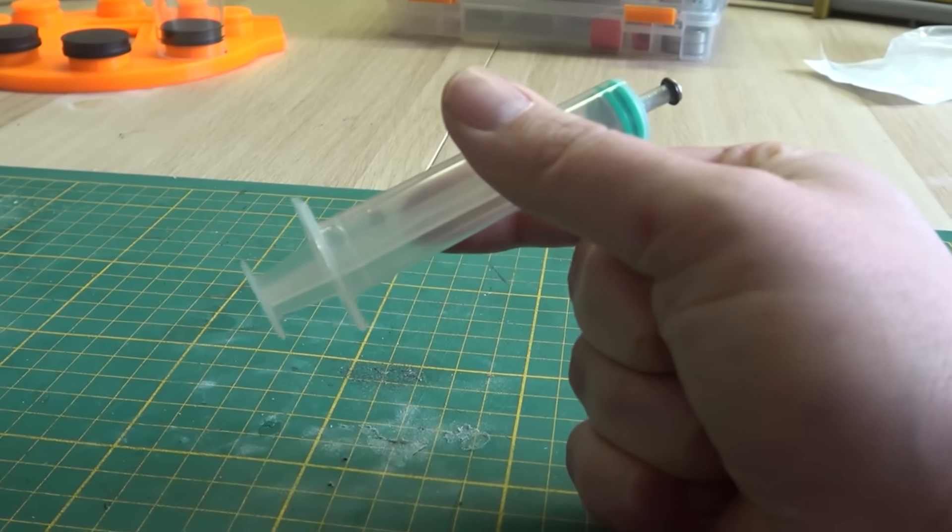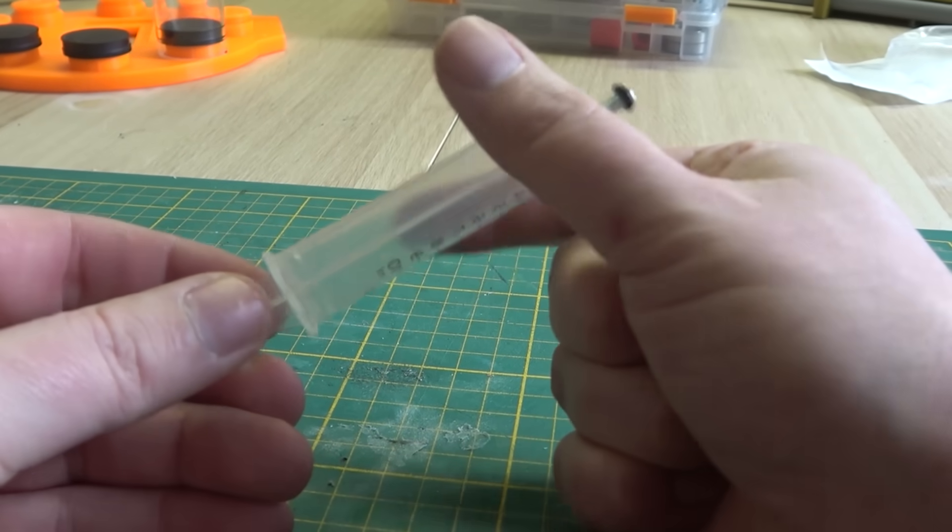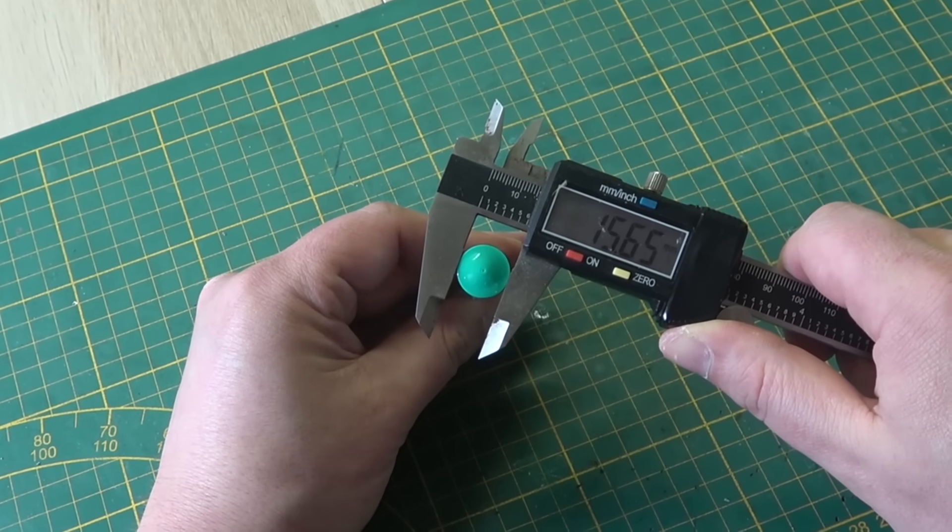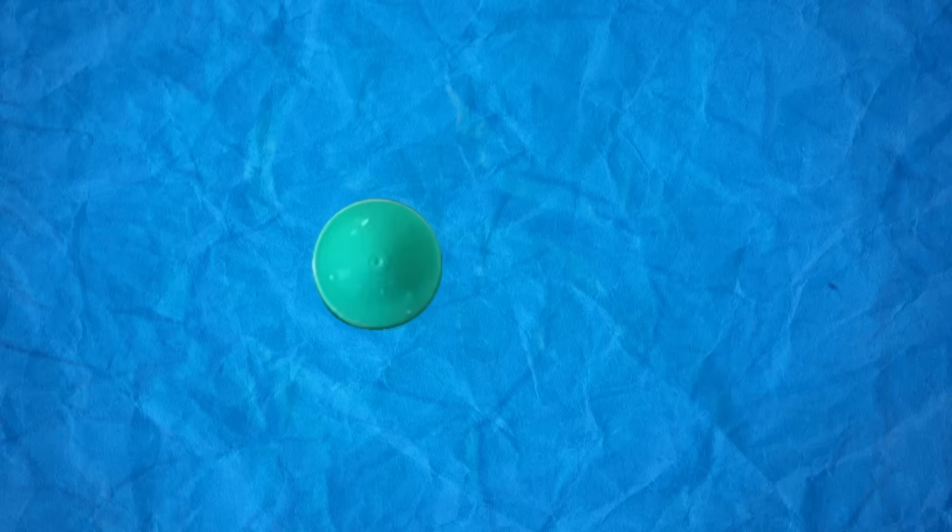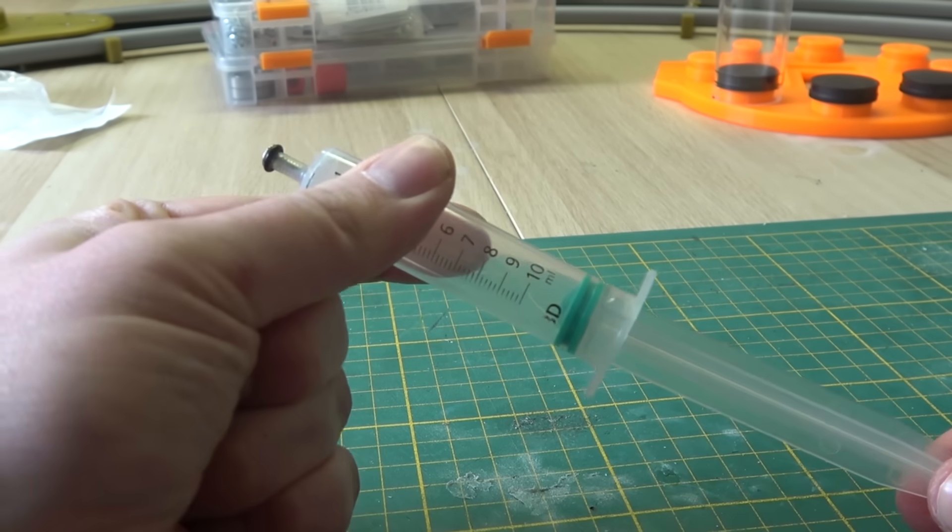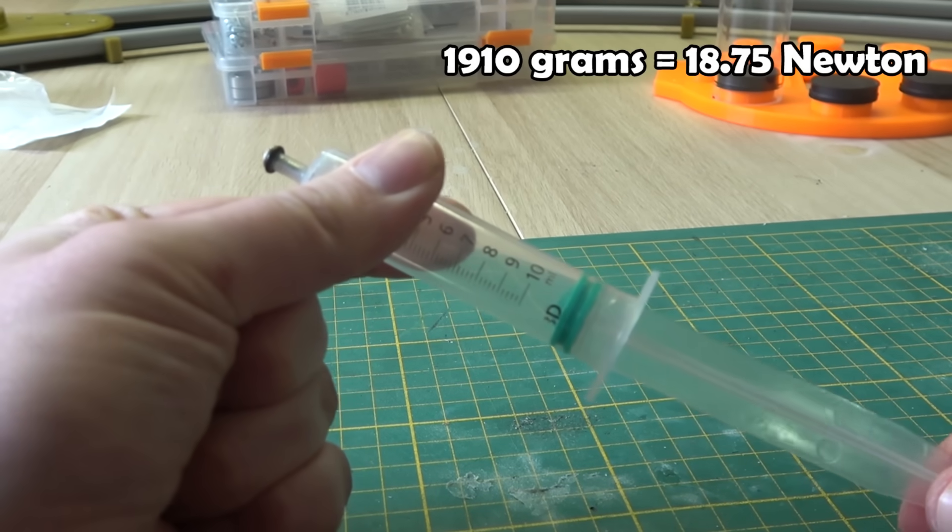For example, the plunger of this little syringe has a diameter of 15.6 mm. So if we do the math, this piston has a surface area of 1.91 square centimeters. That means that with the vacuum inside, this piston should be theoretically pushed back in with a force of around 1,910 grams.